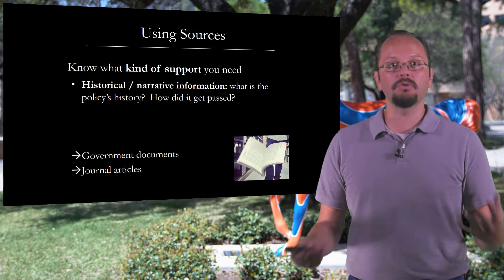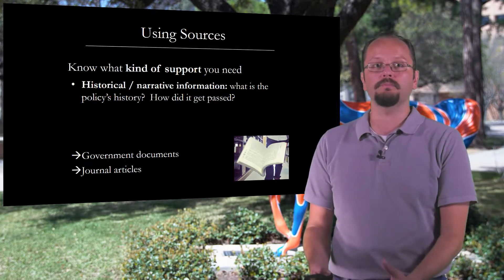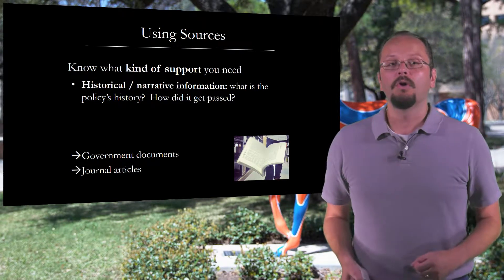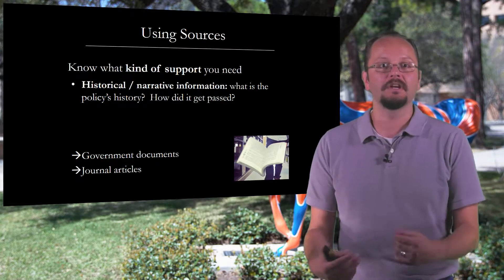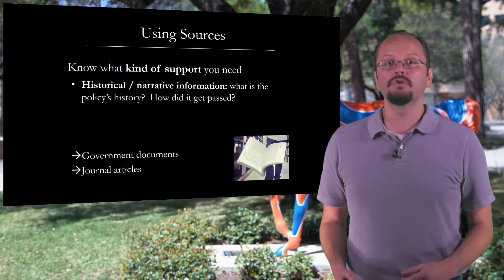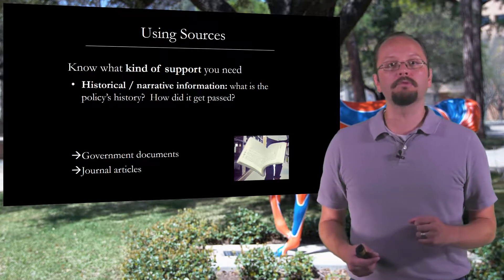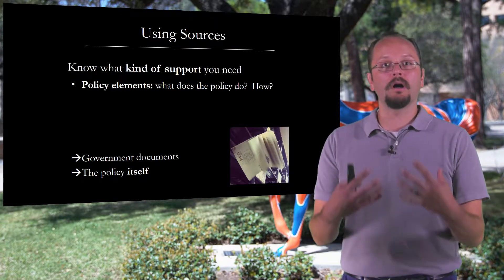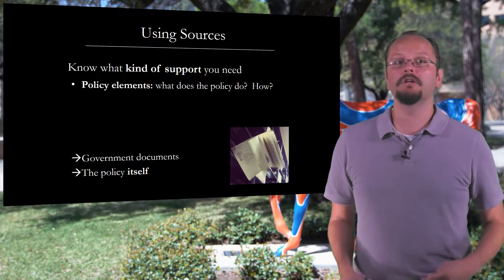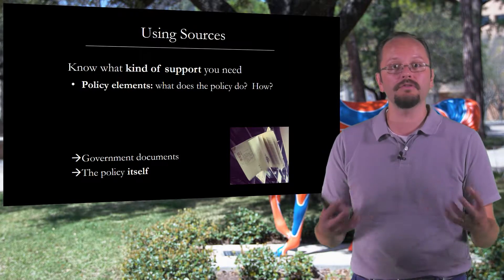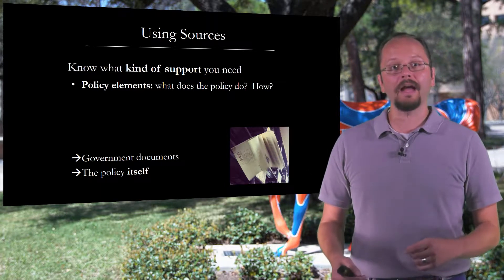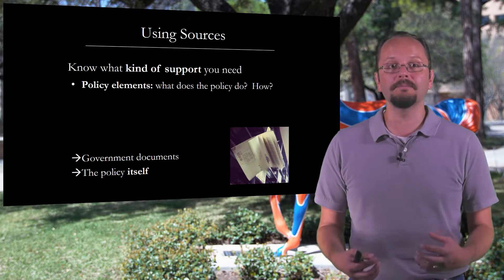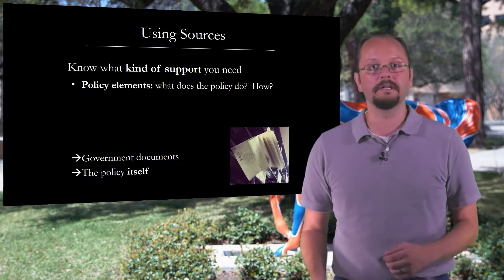If you're providing historical information — the history of the policy or the history of the social problem — you're going to need different kinds of sources. You'll be making claims about how the policy's history developed or how the policy itself got passed, and to support those claims you're going to need government documents. You may also pull some of that information from academic journal articles. When you discuss the policy itself in your policy description section, you'll need government documents and often the policy itself to describe what it does and how it does it.